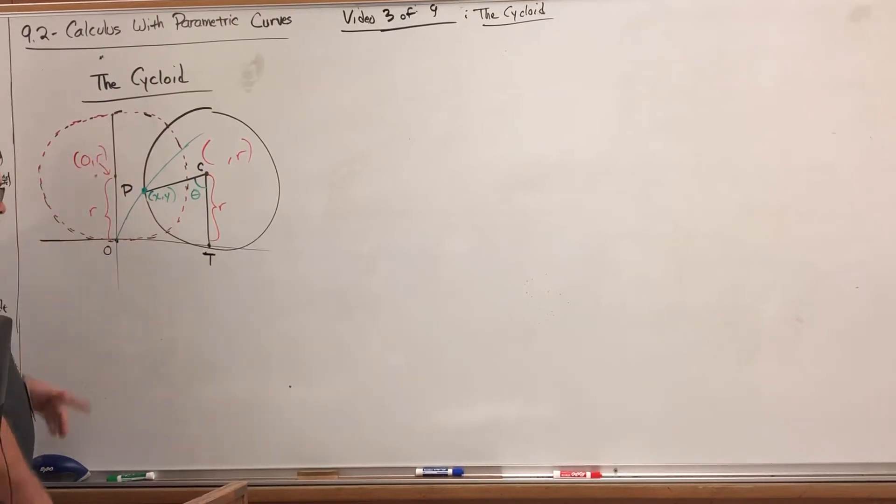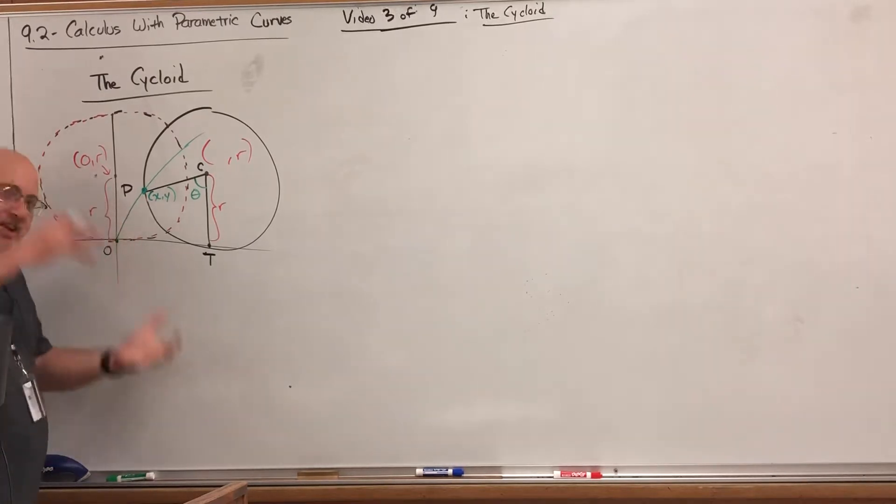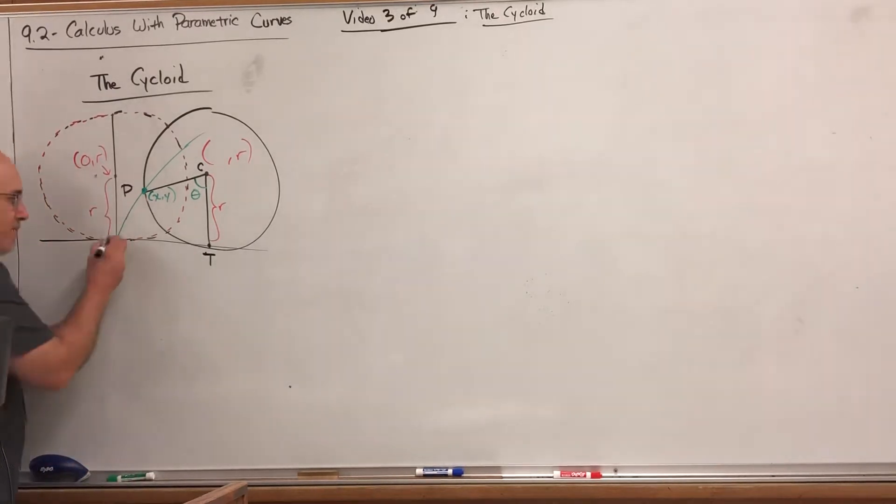Imagine you have a circle sitting at the origin on the ground, so the center is not at the origin but up here somewhere. Let's say the radius is r, so the center would be at zero comma r if we have the circle sitting at origin.